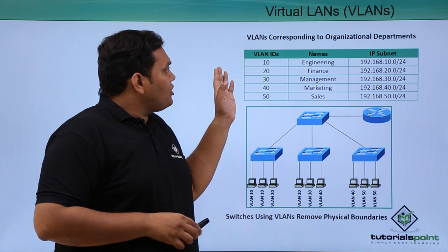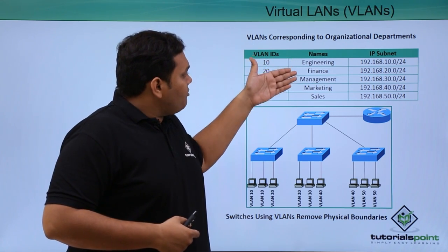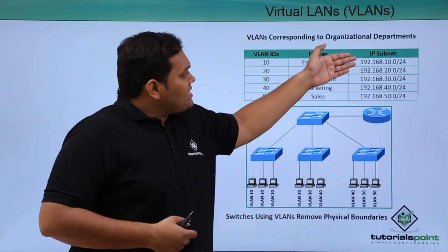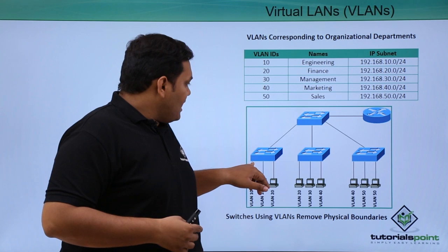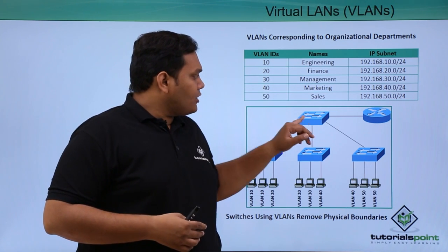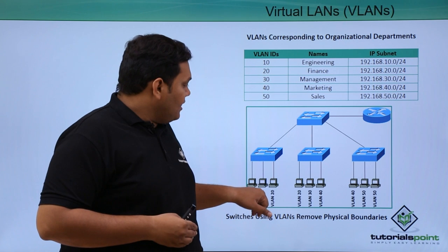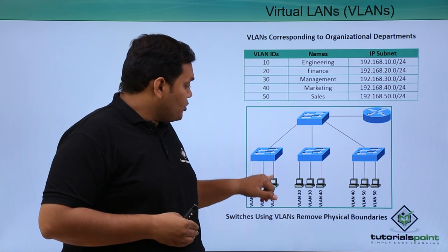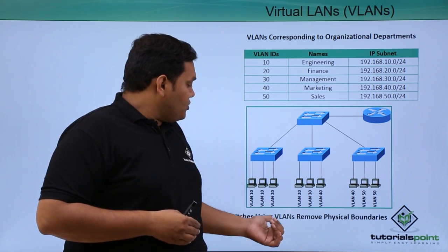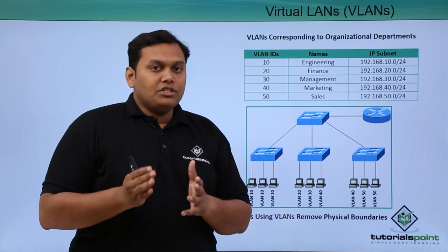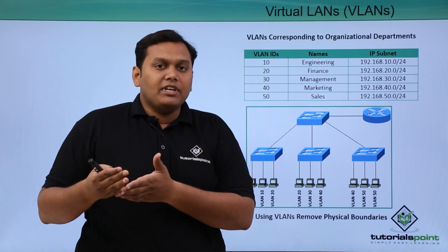Corresponding to organizational departments, five VLANs are created — five broadcast domains — with department names assigned and IP subnets 10.0, 20.0, 30.0, 40.0, and 50.0. Three switches are connected to a main switch, which is connected to a router for WAN connectivity. VLANs 10 and 20 are on switch 1, VLAN 20 is also on switch 2, and VLANs 30 and 40 are available as well. This demonstrates how switches using VLANs remove routing boundaries. Different types of VLANs will be discussed in the next video.